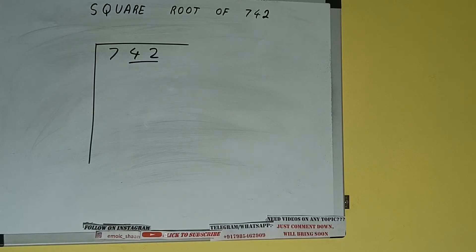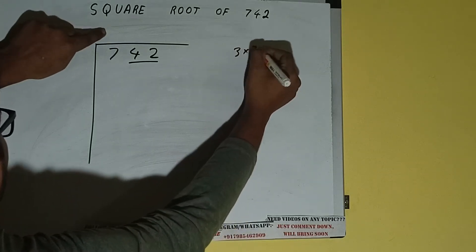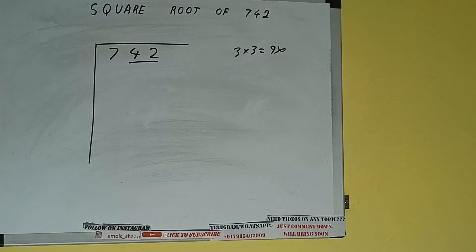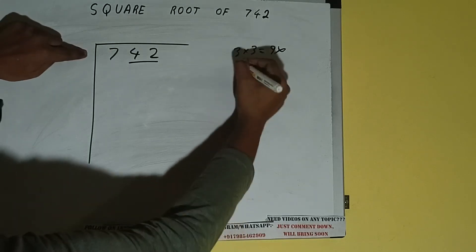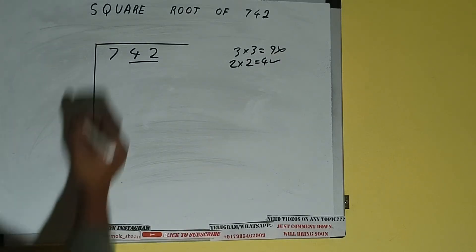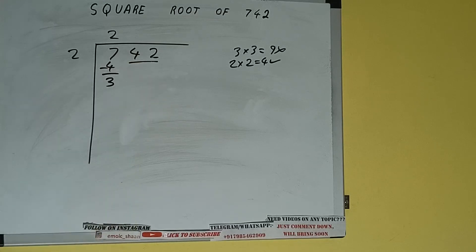The rule is whatever number we write here we have to write here also. So if we write 3 here and 3 here it will be 9 which is greater than 7 so we cannot take it. If we write 2 here and 2 here it will be 4 which is good to take. So 2 here and 2 here, 4 subtract, 3 will be left.